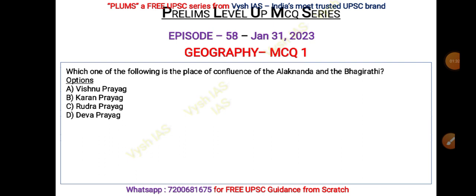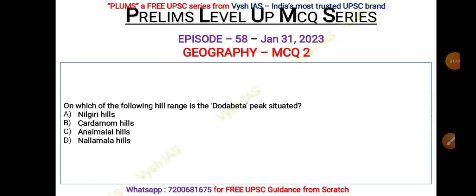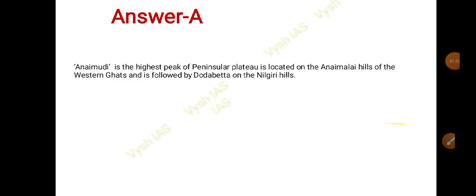Please write your answer in the comment section. The answer is D — Dev Prayag. Bhagirathi meets Alaknanda at Dev Prayag, and from here onwards the river is known as Ganga.